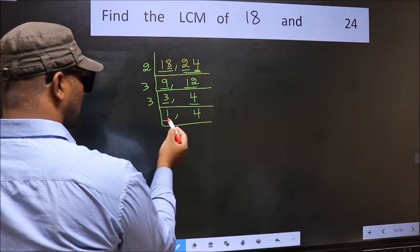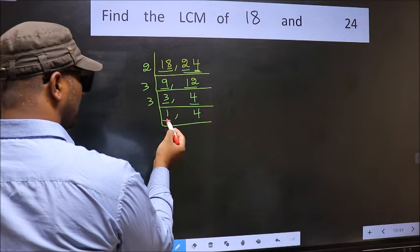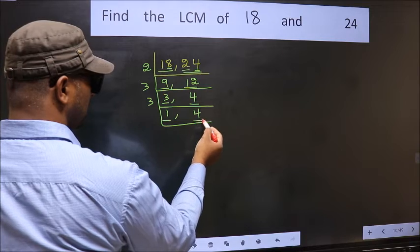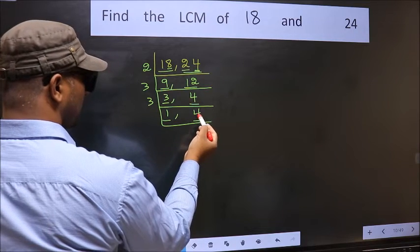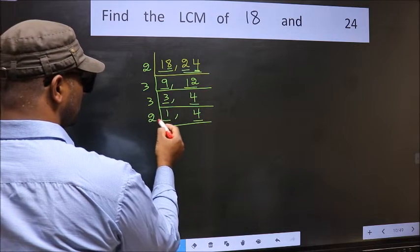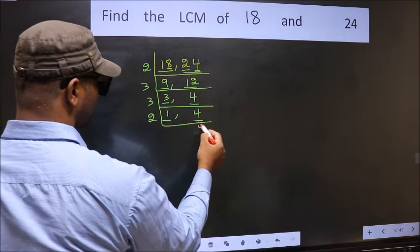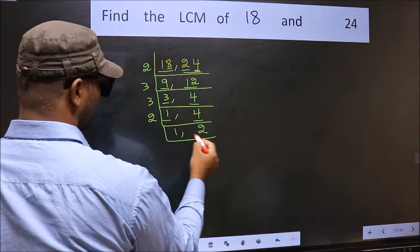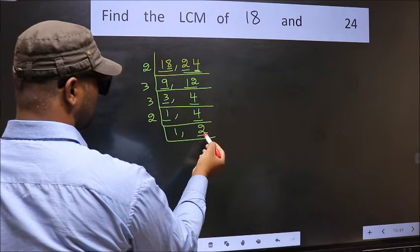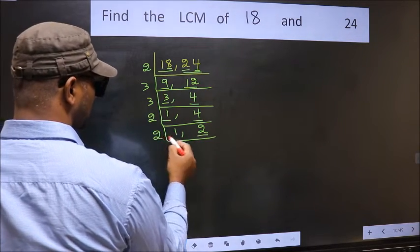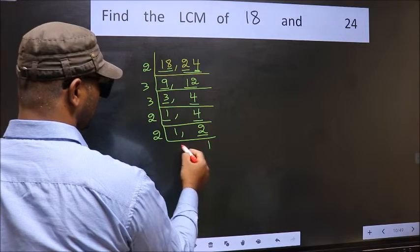Now we got 1 here, so focus on the other number 4. Now 4 is 2 times 2 is 4. Now we have 2. 2 is a prime number, so 2 times 1 is 2.